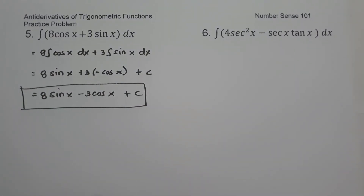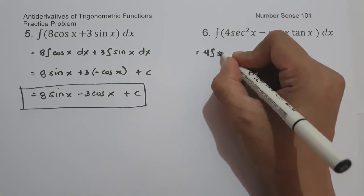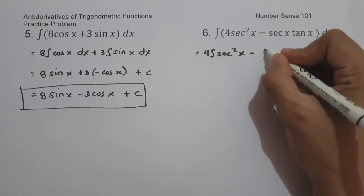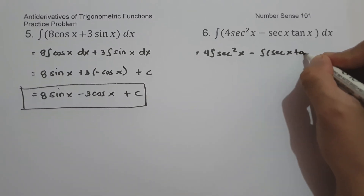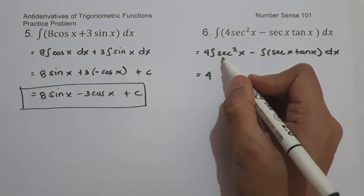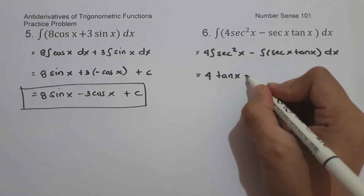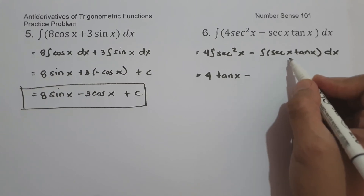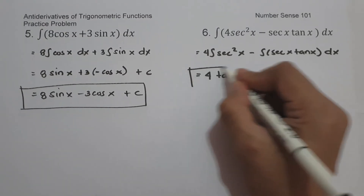On number six, what is the antiderivative of 4 secant square x minus secant x times tangent x dx? Let us have 4 times the antiderivative of secant square x minus the antiderivative of secant x times tangent x dx. So we have 4 times tangent x minus secant x plus c. This will be our answer.